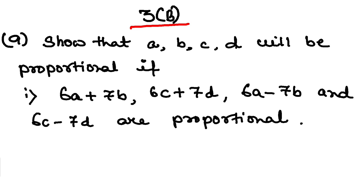So that a, b, c, d will be proportional if 6a plus 7b, 6c plus 7d, 6a minus 7b and 6c minus 7d are proportional.